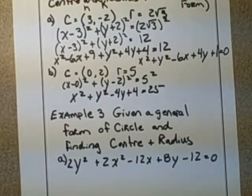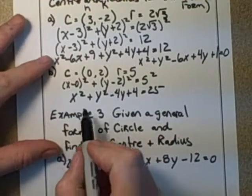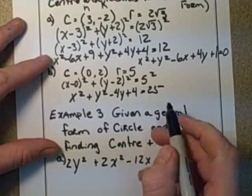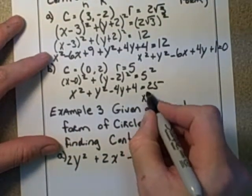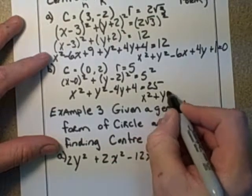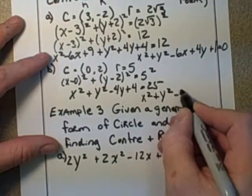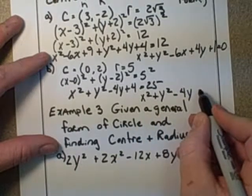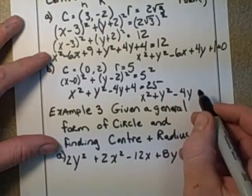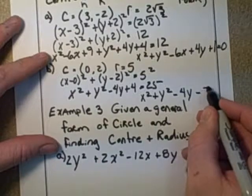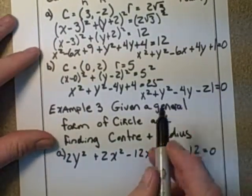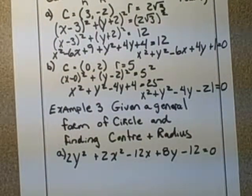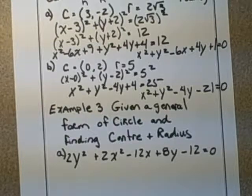So then if we write that in proper order to get the general form, it's x² + y² - 4y. And if we minus 25 from both sides, we are going to get -21 = 0. Notice there's no x coefficient in that one because it was at a 0x point in part of our center.